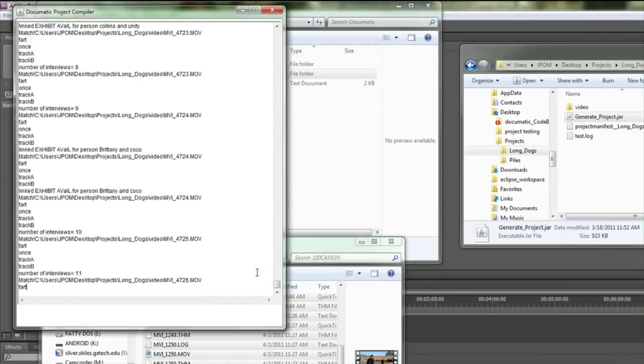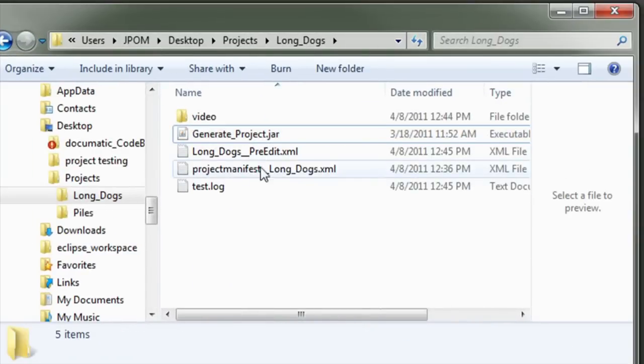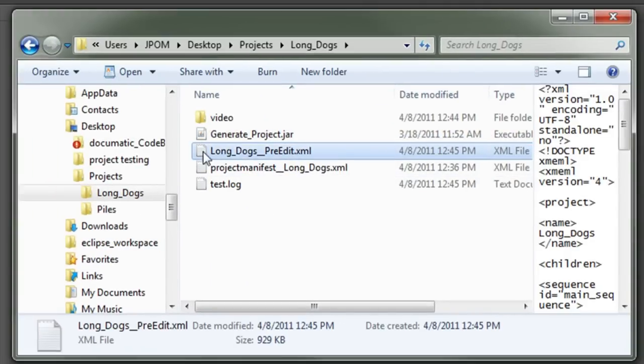Then, when they double-click the project generator, a new pre-edited rough cut sequence is intelligently generated.